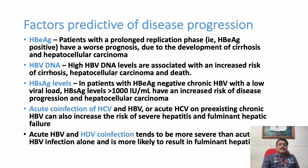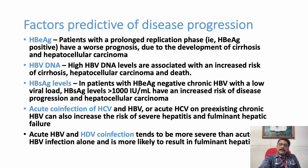Conditions that predict disease progression include HBE antigen — patients in the clonked replication phase have a worse prognosis due to development of cirrhosis and hepatocellular carcinoma. High HBV DNA is also associated with high risk for progressive disorder. High HBS-AG levels also indicate bad prognosis. Acute co-infection with Hepatitis C or Hepatitis D virus can also be a bad prognostic factor.